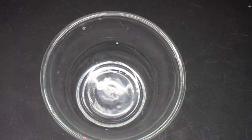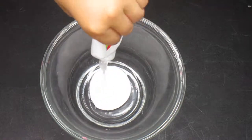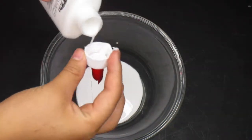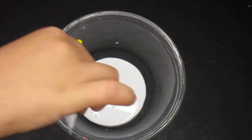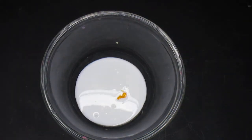So the first thing that you're going to do is pour in your glue. Next you're going to add in a bit of yellow food coloring. And then mix that together.